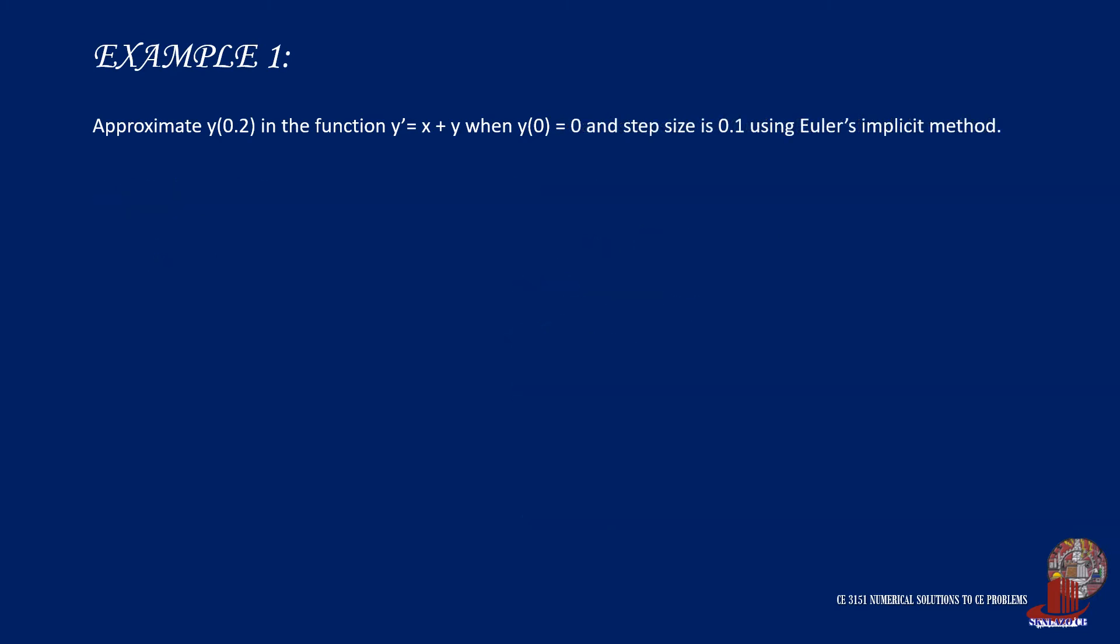With y1 having an equation from the previous values, we can start iterating. Start with x0 = 0 and y0 = 0, coming from the given. x1 is x0 of 0 plus h, which is 0.1, giving x1 = 0.1.